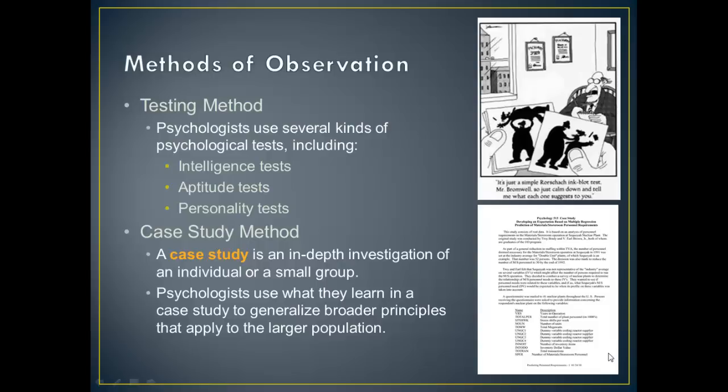This one you're probably familiar with: the testing method. This is just paper and pencil type tests, or a Rorschach test — the inkblot test — which you can see in the cartoon. The testing method can include intelligence tests like an IQ test, an aptitude test to see how well a person would do in a particular field, and a personality test to identify certain things that can go wrong in a person's personality.